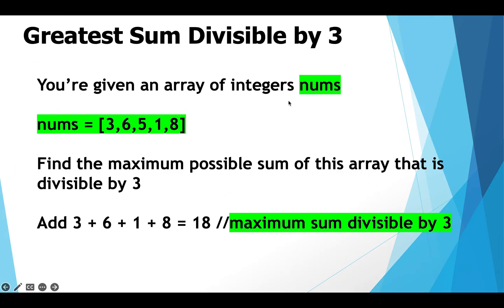You are given an array of integers called nums. The ask is to find the maximum possible sum from this array that is divisible by three. If we add 3, 6, 1, and 8, we get 18, and that happens to be the maximum possible sum divisible by three from this array. We need to come up with a dynamic programming algorithm that produces this result of 18.